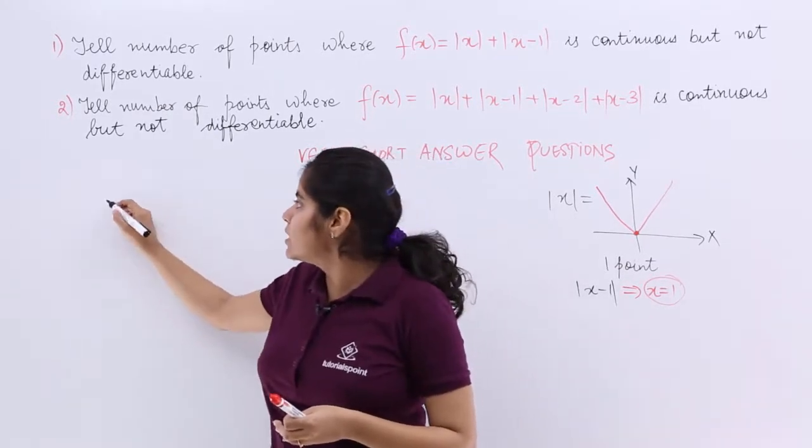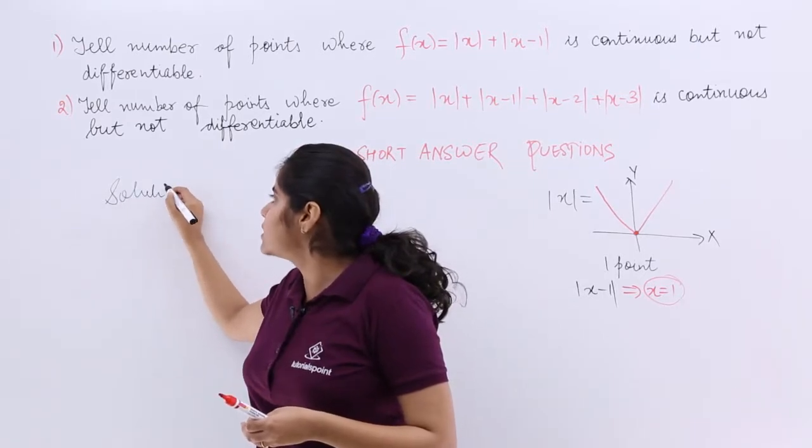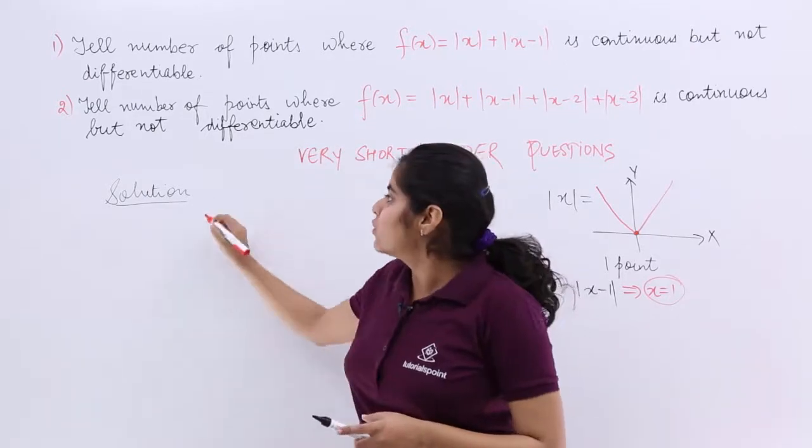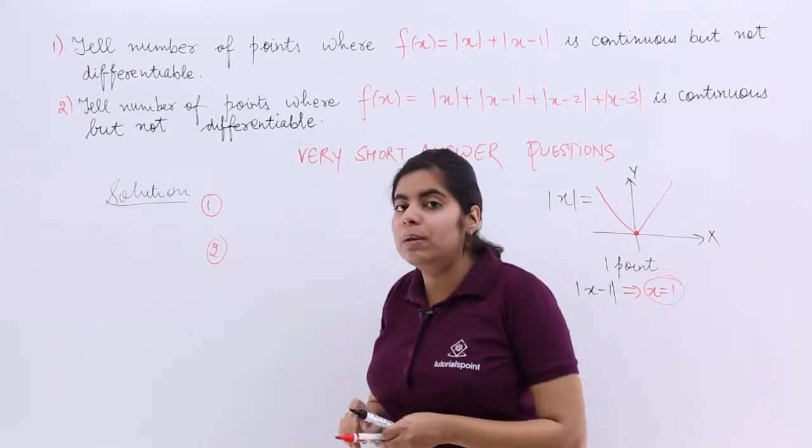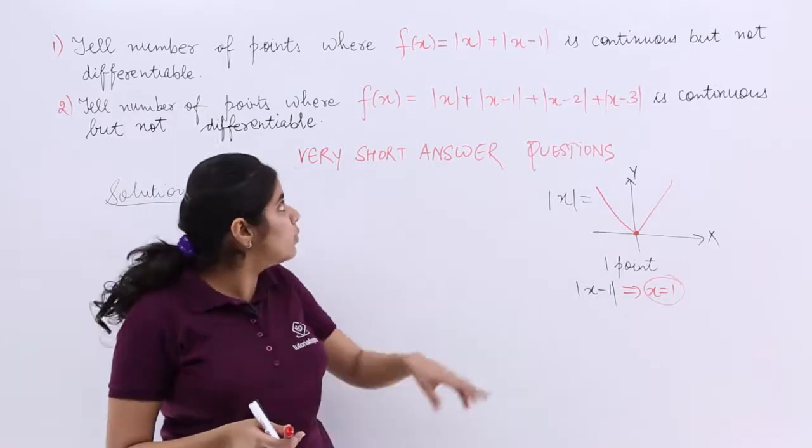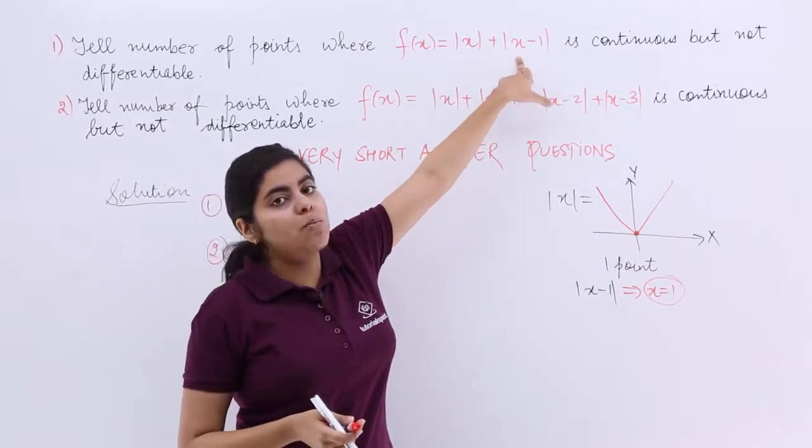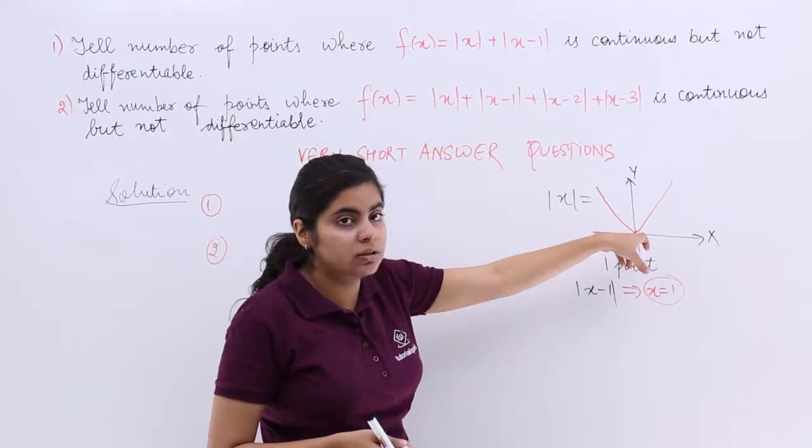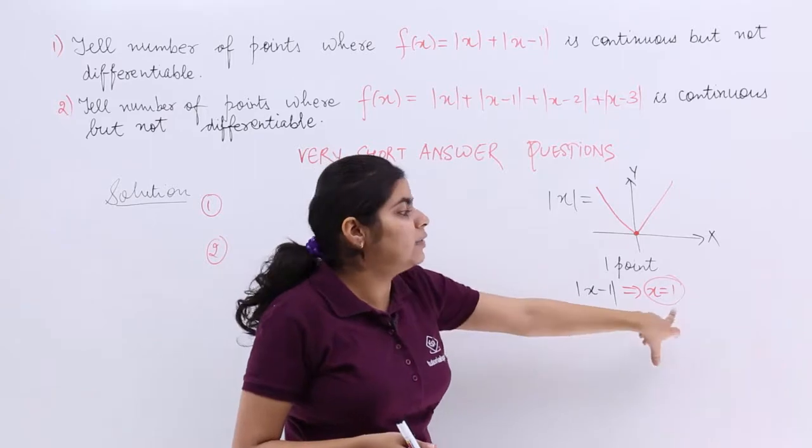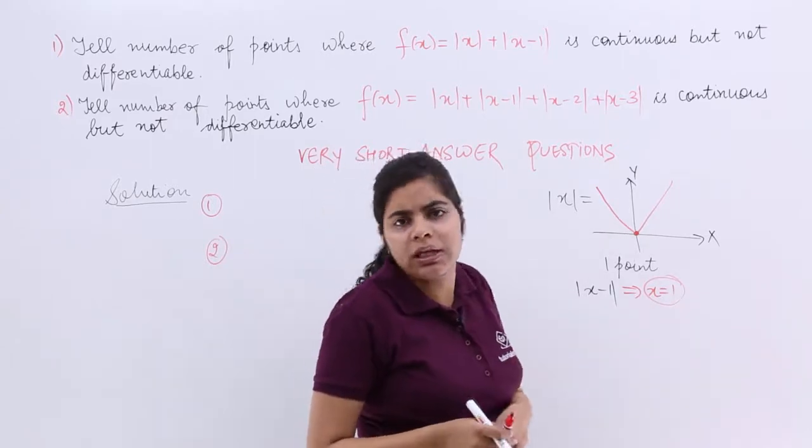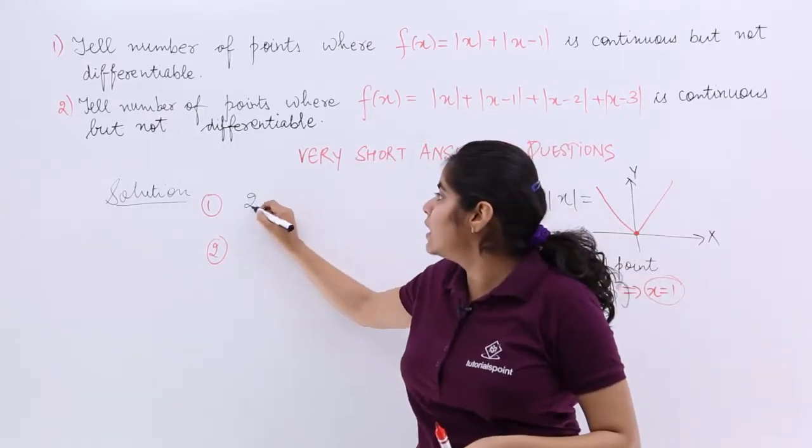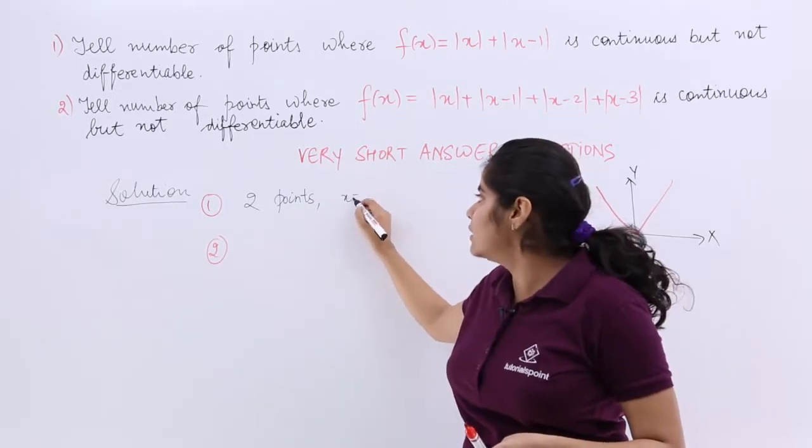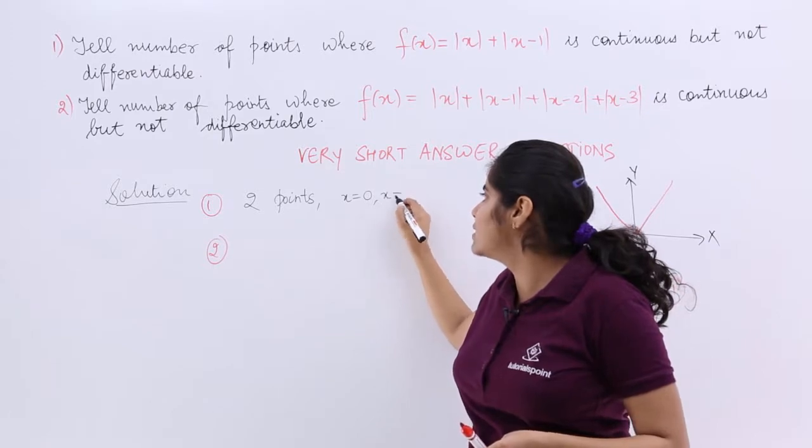So let's start with the solution. The solution is very simple, being only one mark will not take time more than one minute, right? So the first problem is having f(x) and the f(x) is what? Mod x plus mod x minus 1. Now you know mod x will have one point, that is this point x is equal to zero. Mod x minus 1 will have one point, x is equal to one. So total how many points? Two points because they are added up. And if somebody asks me what are those two points? It is not asked in this question, but yes you should know it: x is equal to zero and one.